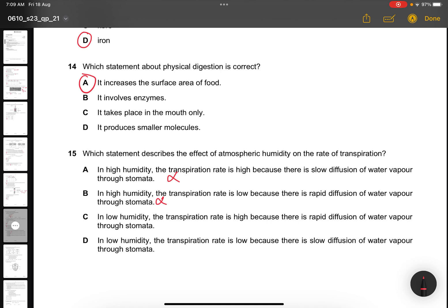In low humidity, the transpiration rate is high because there's a rapid diffusion of water through the stomata. When there's low, it cannot have fast diffusion. But when it's high, it can have faster diffusion of water. So the answer is C. For D, it will be low because low humidity is not low transpiration rate. It should be high rate of transpiration.